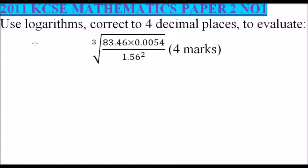2011 paper two, number one: use logarithms correct to four decimal places to evaluate the cube root of 83.46 multiplied by 0.0054, all divided by 1.56 squared.